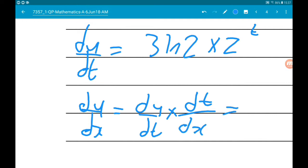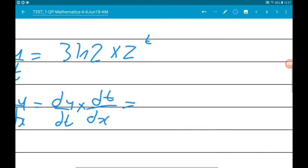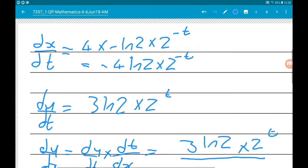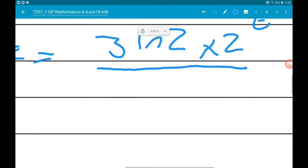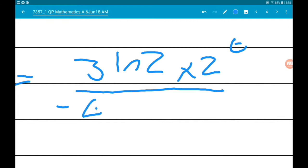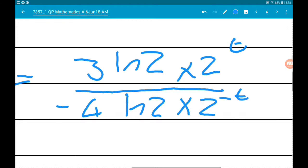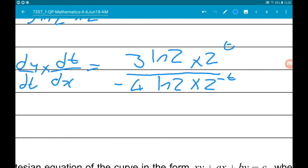So dy by dx is going to be 3 log 2 times 2 to the t over dx by dt, which is minus 4 log 2 times 2 to the minus t. Now the log 2's cancel out. So we've got 3 over minus 4, so minus 3 quarters.